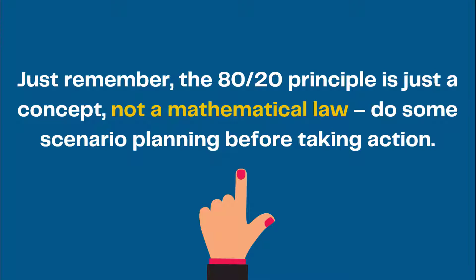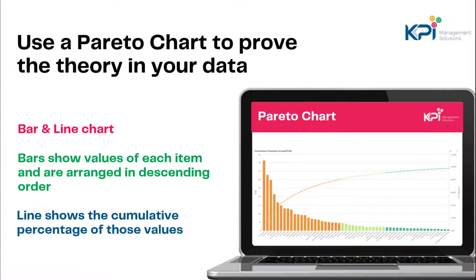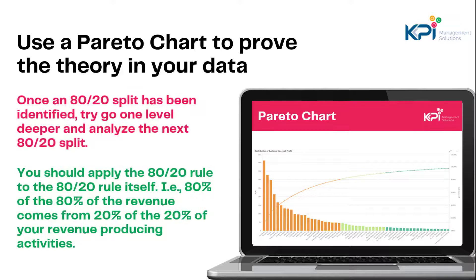The way to prove your Pareto principle is using a Pareto chart — basically a bar and line chart where the bars are arranged in descending order and show the values for each item as vertical bars. A line is overlaid on top showing the cumulative percentage of those values. You then look at where the bars meet the 80% mark on the line, which signifies the items making up around 20% that are resulting in 80% of outcomes.